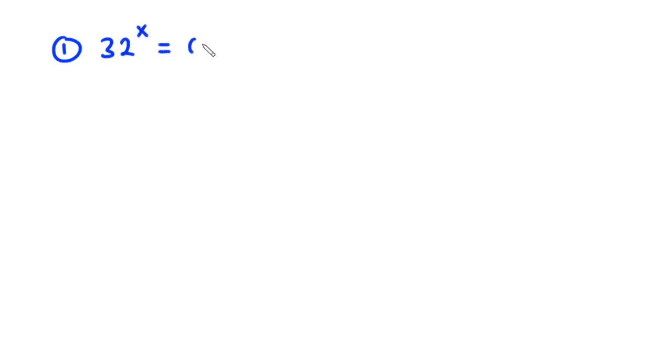For example 1, we have 32 exponent x equals 0.25. Now to find the value of x, we need to make sure that we have common bases, or we have the same base. Then we can compare their exponents and find the value of x.